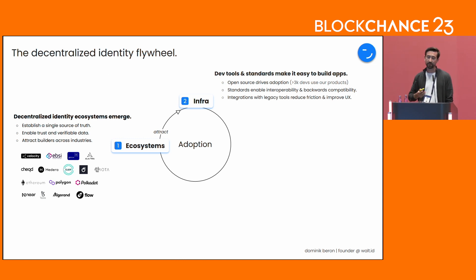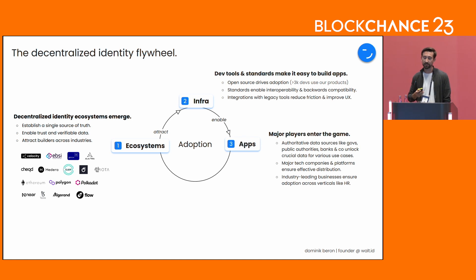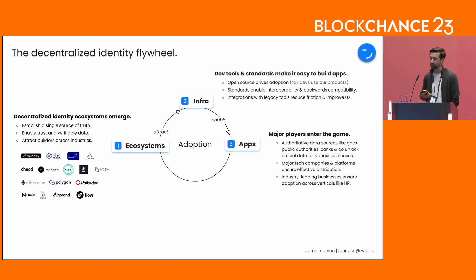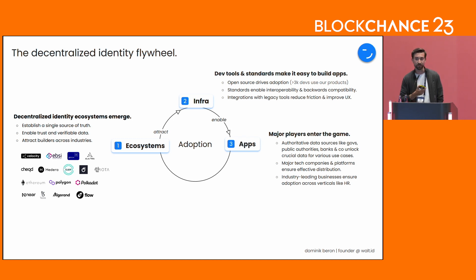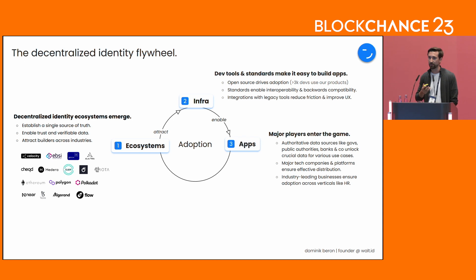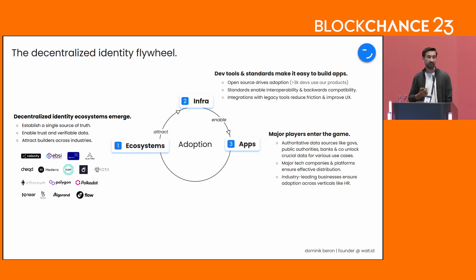The development of infrastructure and dev tooling enables applications which create real-world value. What we're seeing is that all the major players we need are getting into the game. That means important data sources like governments, banks, and large enterprises that can attest all kinds of information about you, as well as major tech companies like Microsoft, Google, and Apple, open banking companies, and industry-leading businesses across various verticals like employment, HR, supply chain, and healthcare — all adopting these technologies to make sure we can have use cases basically everywhere.